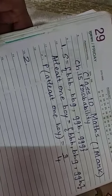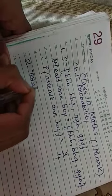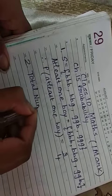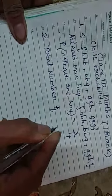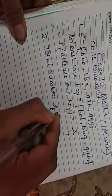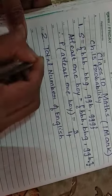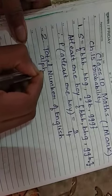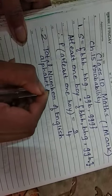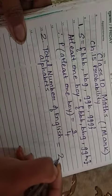We will solve the question. See, so, total number of English alphabets which is equal to 26.